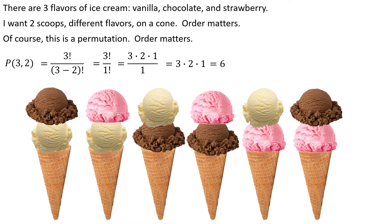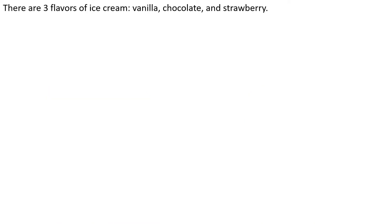So there are six different ways. And sure enough, if vanilla is the first scoop, second scoop's either chocolate or strawberry. If chocolate's the first scoop, I got to do vanilla or strawberry. And then if strawberry's the first scoop, it's going to be vanilla or chocolate. So the order matters and we do a permutation.